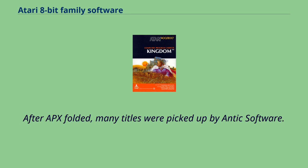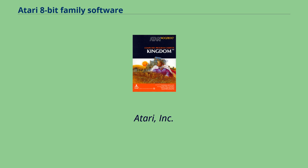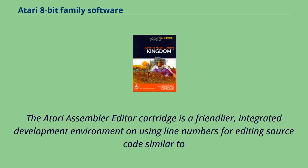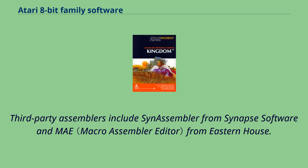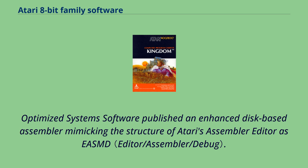After APX folded, many titles were picked up by Endic Software. Atari Inc. published two assemblers. The Atari Assembler Editor cartridge is a friendlier integrated development environment using line numbers for editing source code, similar to Atari BASIC. The professionally targeted Atari Macro Assembler shipped at a higher price on a copy-protected disk without editor or debugger. Third-party assemblers include SynAssembler from Synapse Software and MAE from Eastern House. Optimized System Software published an enhanced disk-based assembler mimicking the structure of Atari's Assembler Editor, as EaseMD.